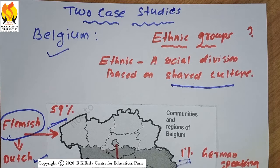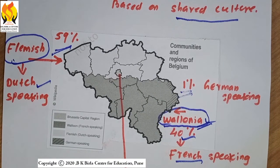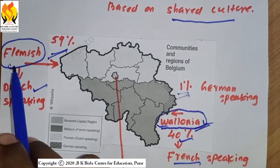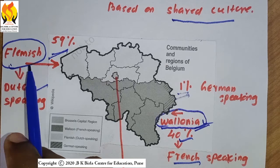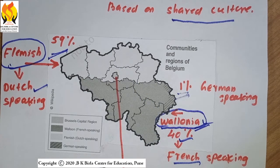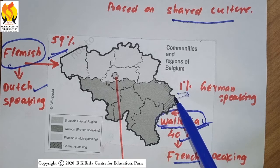The chapter on power sharing can be explained through two case studies — one from Belgium and another from Sri Lanka. Belgium is a very small country. It is divided into two regions: the northern side, the shaded area, is known as the Flemish region, and the southern side, the darkened area, is known as Wallonia. In this country, 59% of people speak Dutch, 40% speak French, and the remaining 1% speak German.